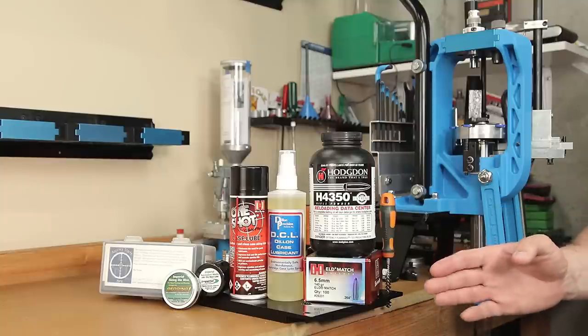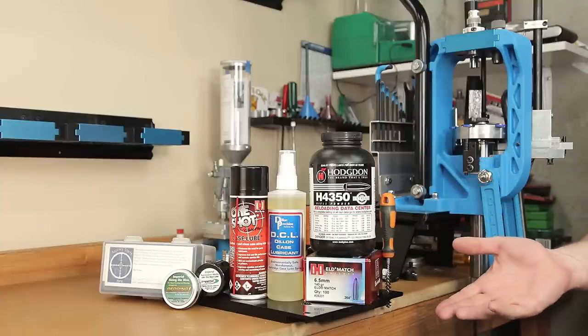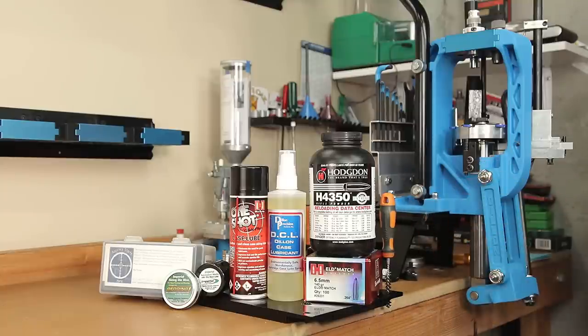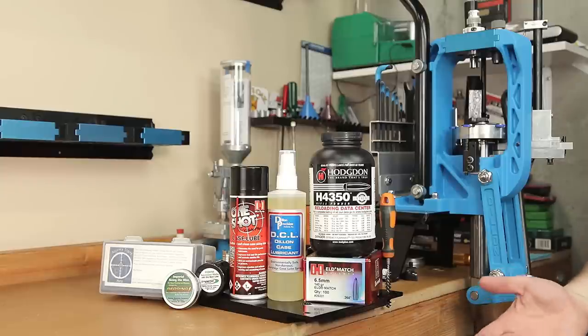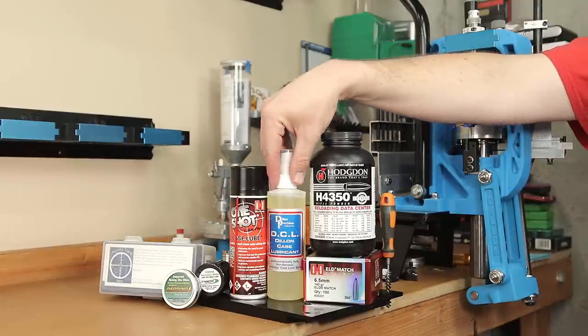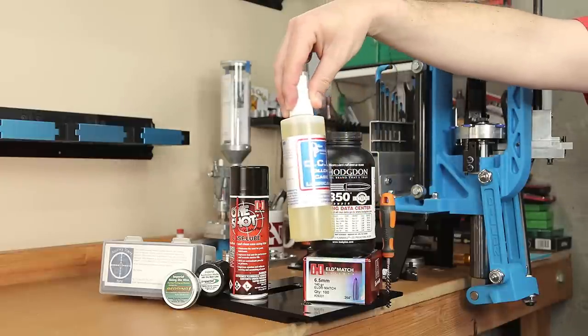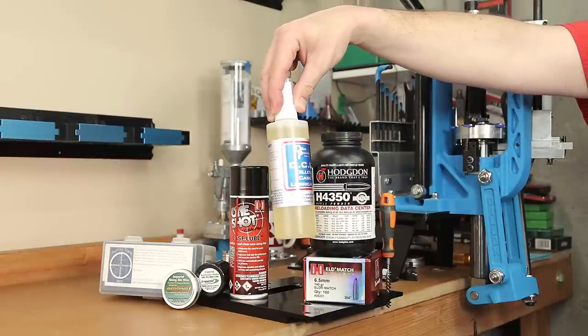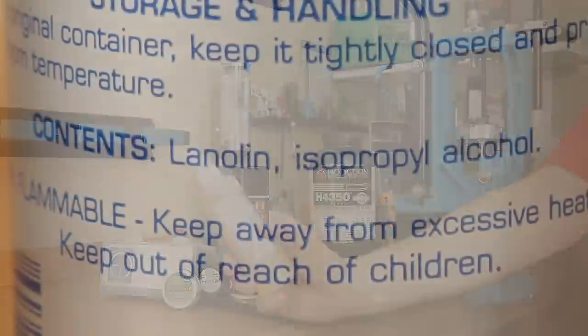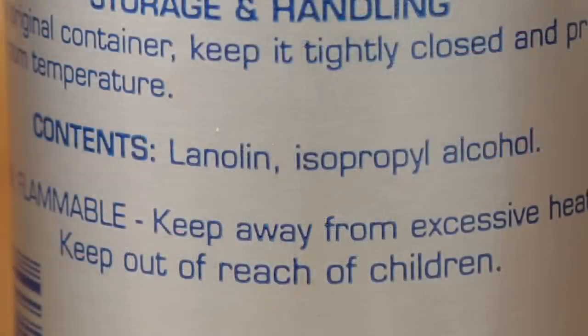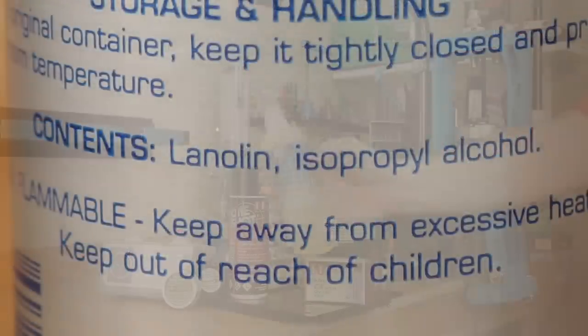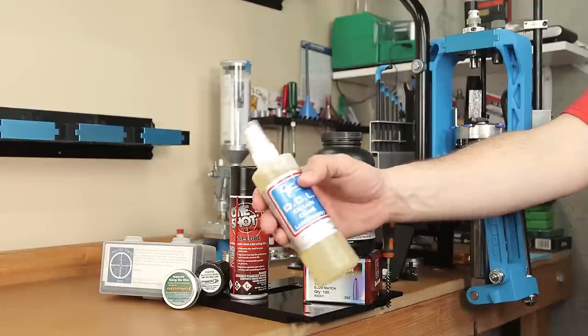Now as far as the contents of any one of these products go, I'm sure you can go on the internet and do research to find out exactly what it contains. I'm not really going to speculate here. I will say that the Dillon Case Lube, right on the package, says environmentally safe non-aerosol cartridge-based case lube spray. They make no point to hide - right on the back it says the contents are lanolin and alcohol, so not really a big secret what is in the Dillon Case Lube.